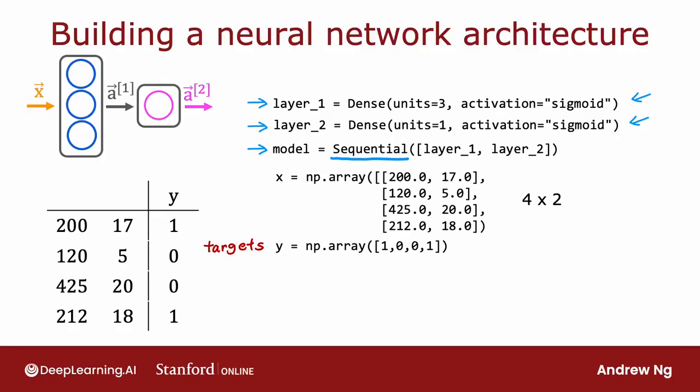if you want to train this neural network, all you need to do is call two functions. You need to call model.compile with some parameters. We'll talk more about this next week, so don't worry about it for now. And then you need to call model.fit(x,y), which tells TensorFlow to take this neural network that it created by sequentially stringing together layers one and two, and to train it on the data x and y.